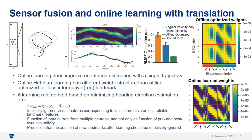Upon further analysis of the learning rule from an optimization perspective, we find that a purely Hebbian rule does not minimize the heading direction estimation error. We formulate a new online learning rule which does minimize this estimation error. This learning rule is a function of input current from multiple neurons and not only a function of pre- and post-synaptic activities. As opposed to a purely Hebbian rule, this rule predicts experimentally that the addition of new landmarks after learning should be effectively ignored.